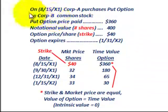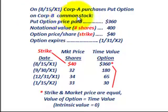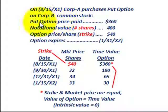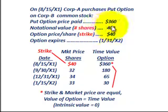So let's look at our example. On 8/15/X1, Corporation A purchases a put option for Corporation B's common stock — with this put option, they can sell Corp B's common stock at the strike price. The price paid for the put option is $360. The notional value — those are the number of shares they can sell — is 400 shares. And the strike price in this example is $40.